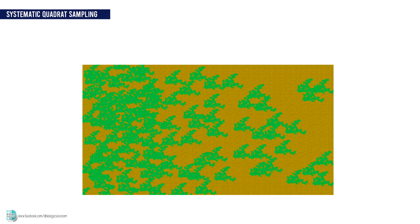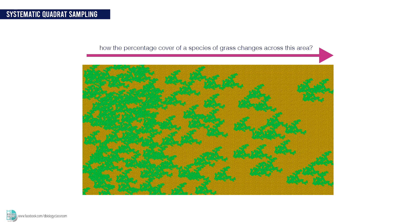Quadrat sampling can be carried out systematically as well. For example, if I want to know how the percentage cover of a species of grass changes across an area, random sampling would not allow me to obtain that information.